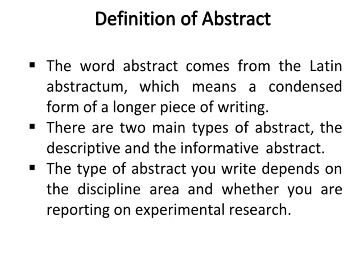Definition of abstract: the word abstract comes from the Latin abstractum, which means a condensed form of a longer piece of writing. There are two main types of abstract: the descriptive and the informative abstract. The type of abstract you write depends on the discipline area and whether you are reporting on experimental research.